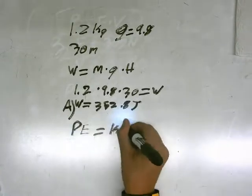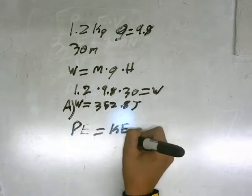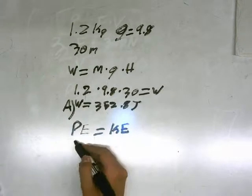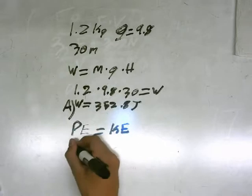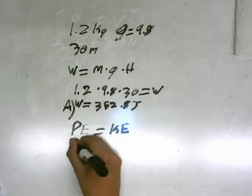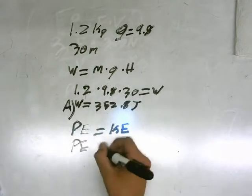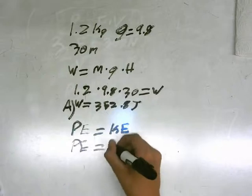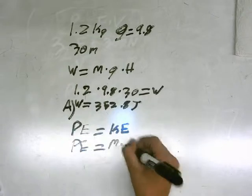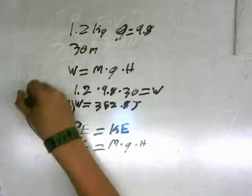So to get kinetic energy, we can just find potential energy. The equation for potential energy is mass times gravity times height. Look a little familiar? So it's pretty easy.